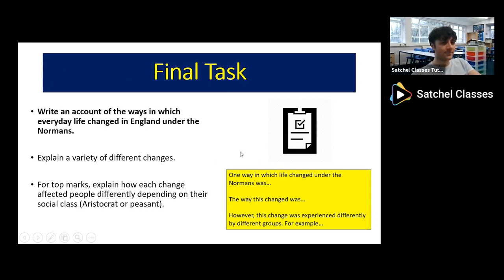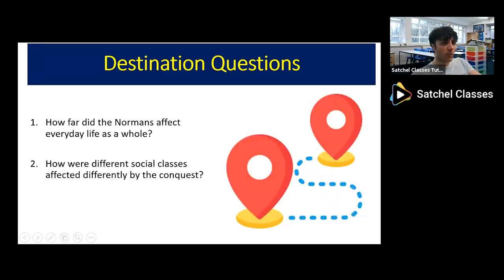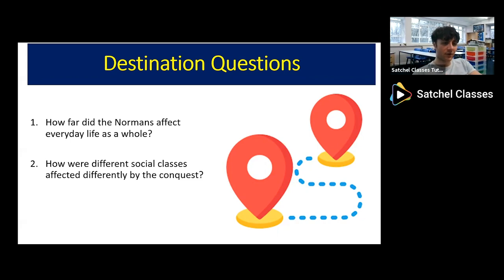To remind you where we've been today: we looked at two destination questions. First, how far did the Normans affect everyday life as a whole, considering a variety of changes. Second, how different social classes were impacted differently — starting with the point that even modern-day elites are in some senses descended from the Norman conquerors, and then examining how each of the four changes — land, laws, castles, and language — affected the aristocracy very differently from the peasants. Thank you for listening, and good luck with the rest of your courses.